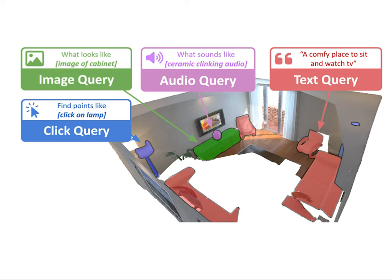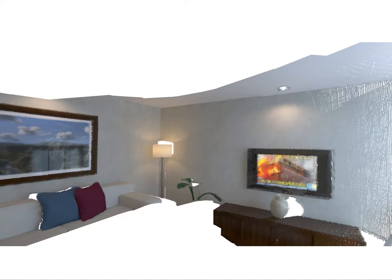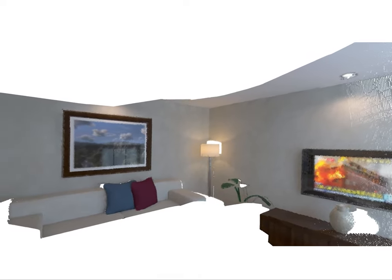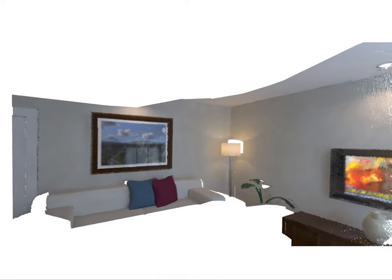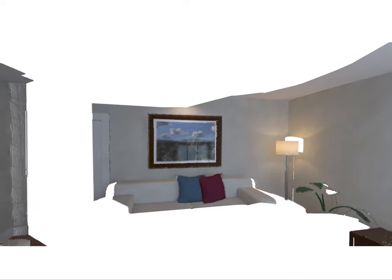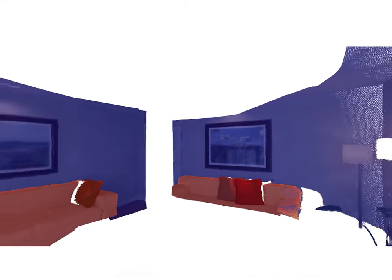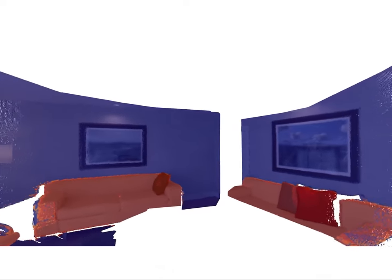To address these limitations, we present Concept Fusion, Open Set Multimodal 3D Mapping — a scene representation that is both completely open set and inherently multimodal. Let's take a look at some of the things Concept Fusion can do. Here is a point cloud reconstruction of a room. In addition to specific items, we can query the map with open set text queries such as 'somewhere comfy to sit,' which highlights both the sofa and the chairs in the room.